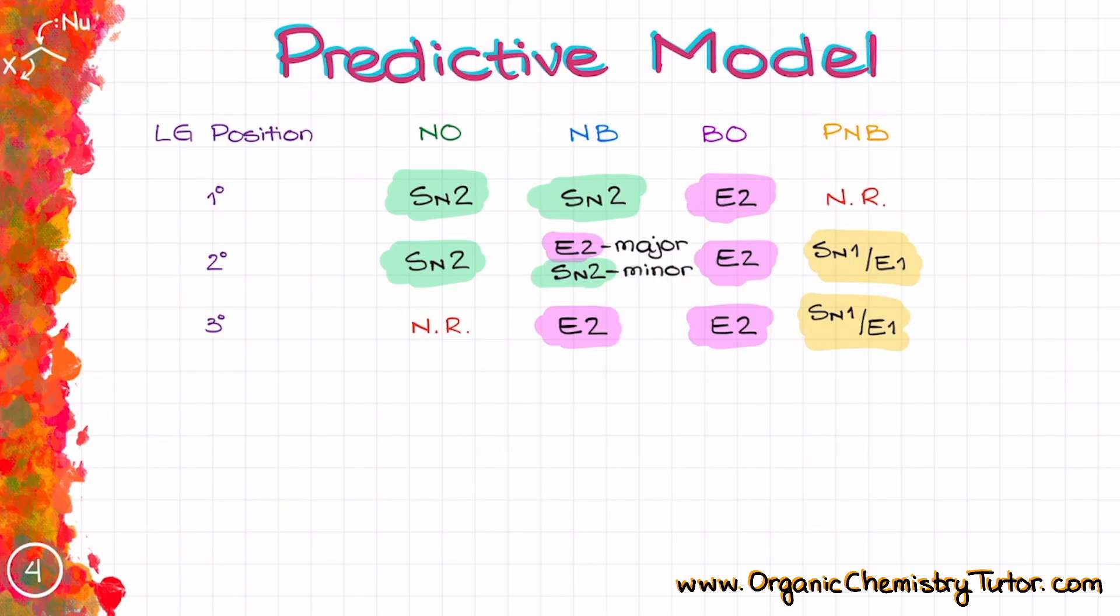When it comes to the cases when we are competing SN1 and E1, we are going to look at the temperature of our reaction. Elevated temperatures promote E1 reactions, while lower temperatures favor SN1 reactions. Remember to only look at the temperature if you are deciding between SN1 and E1 reactions. It is only going to matter in those cases. In all other cases, temperature will have a very marginal and insignificant effect.